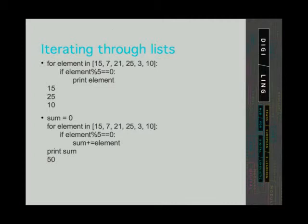As with strings, when iterating through lists we can also put conditions. In the example we are checking if the element of a list is divisible by 5. If it is divisible by 5, we print the element. So when the program comes across the elements 7, 21 and 3, it does not execute the code because the conditions are not met. In the second example we are checking the same condition but instead of printing the elements, we are adding them if they comply with the condition. So we add 15 plus 25 plus 10 and the program returns 50. Try doing the same thing but with an element in a list on which you can't do addition — for example, a list with one element containing a string — and see what happens.